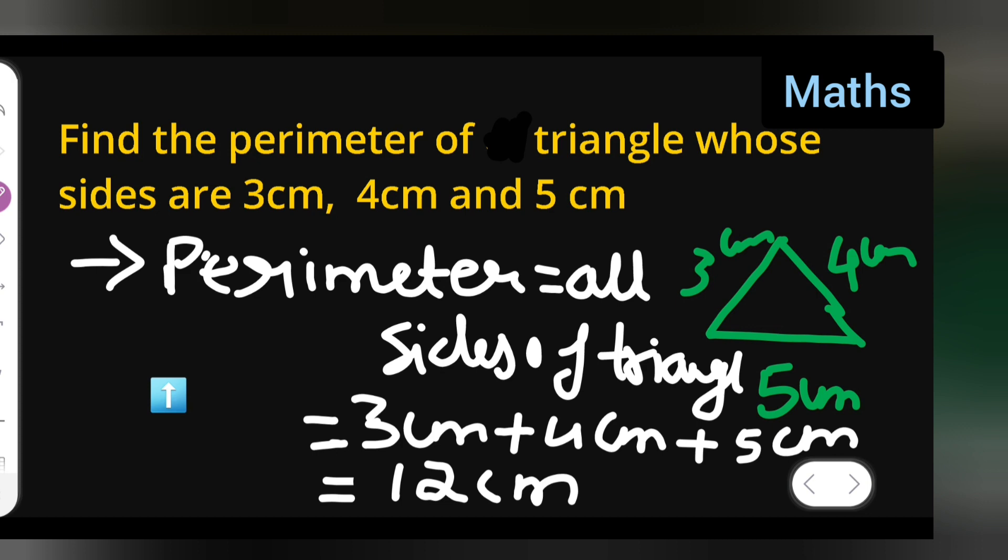But answer is perimeter is equal to 12 centimeter. Perimeter means you'll have to add all the sides. Okay, all the sides, all the sides will have to add. Okay, then you will get 12 centimeter is your answer.